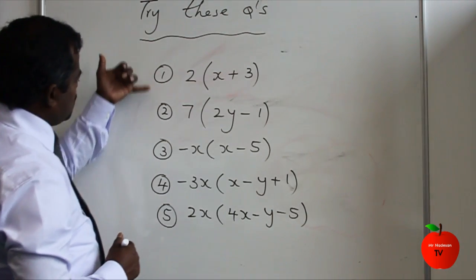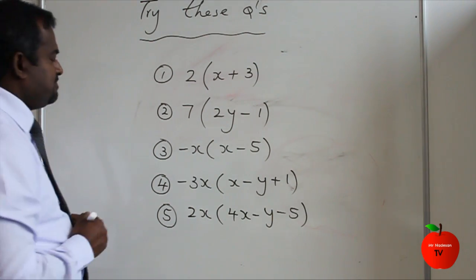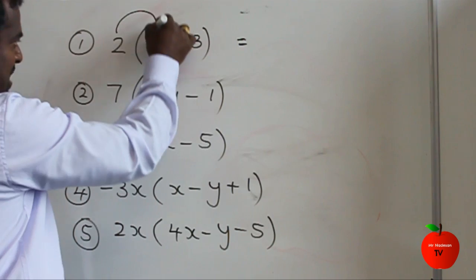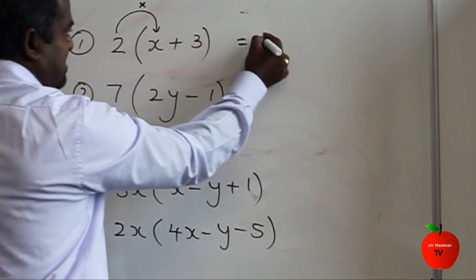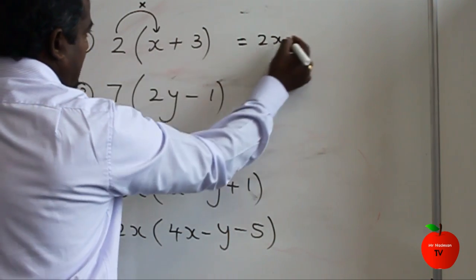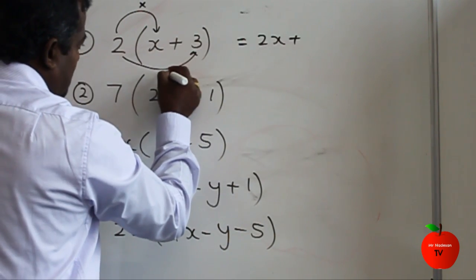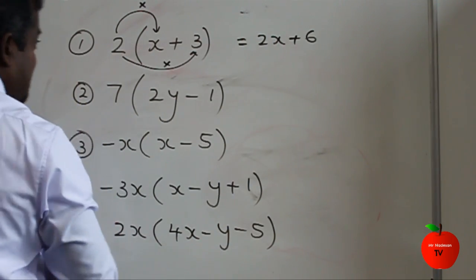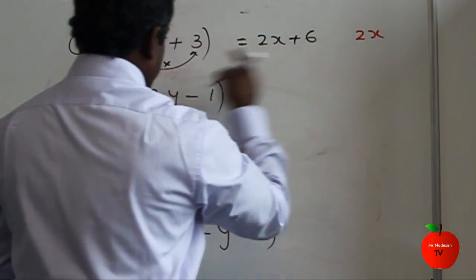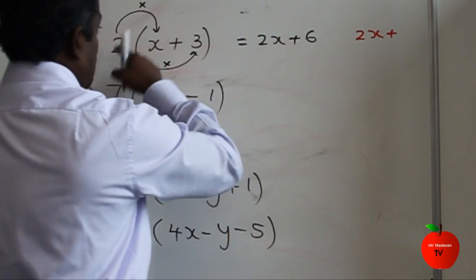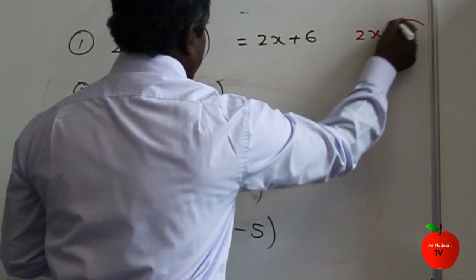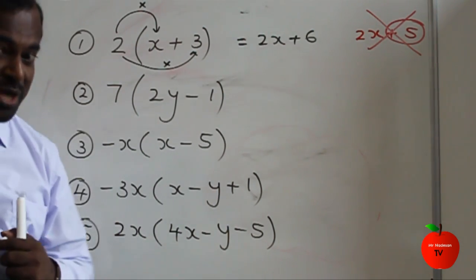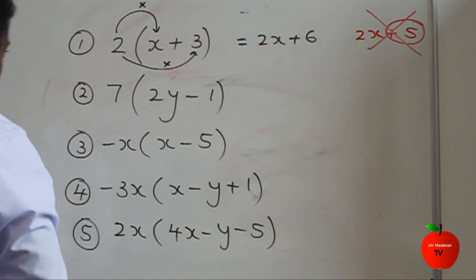Let's check the answers. Question one: expand — each time you multiply. 2 times X is 2X, then plus 2 times 3 is 6. Make sure you don't make the mistake of adding instead of multiplying for the second term — that's the dangerous part.